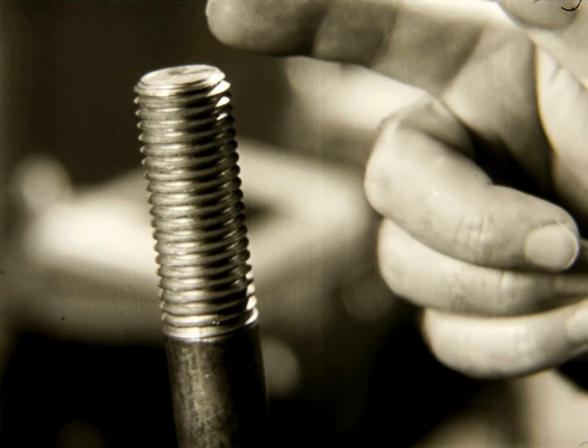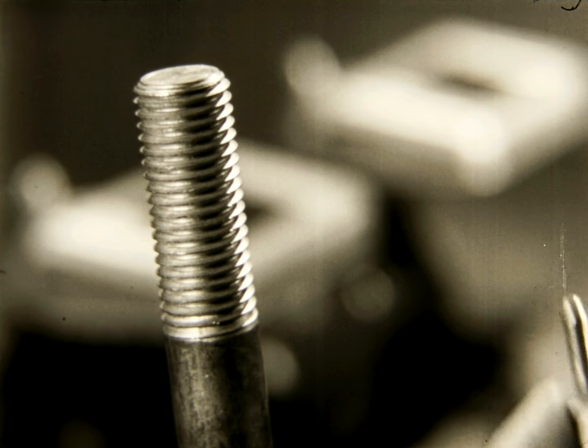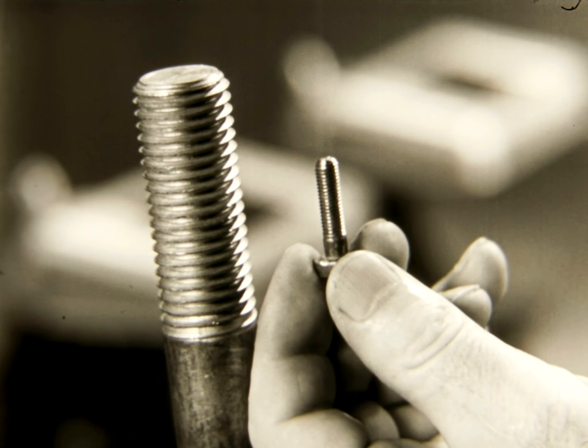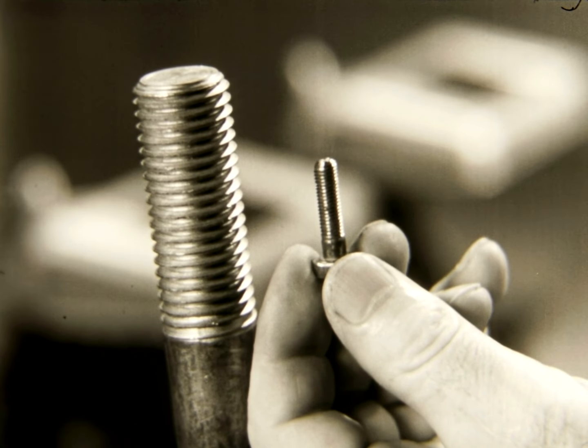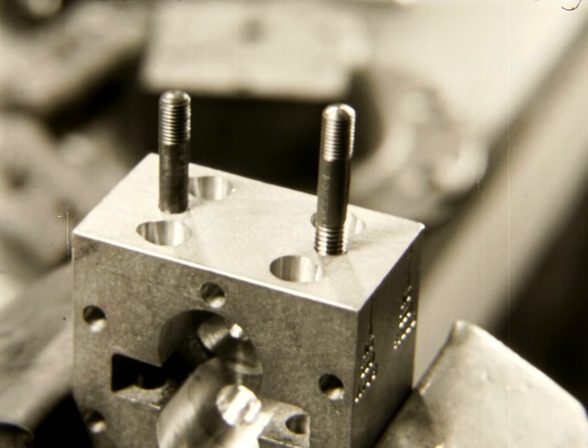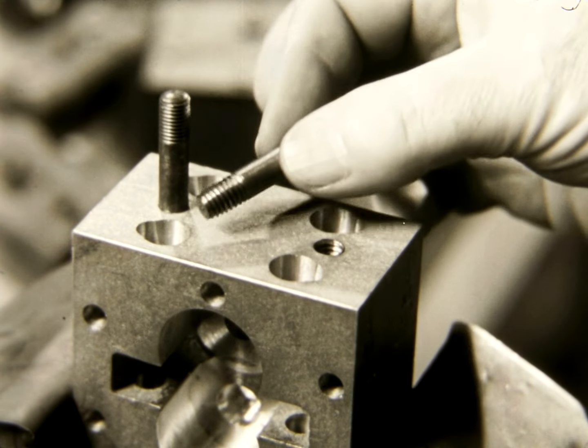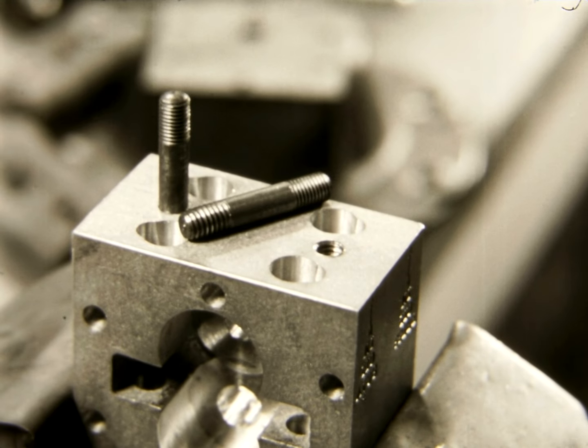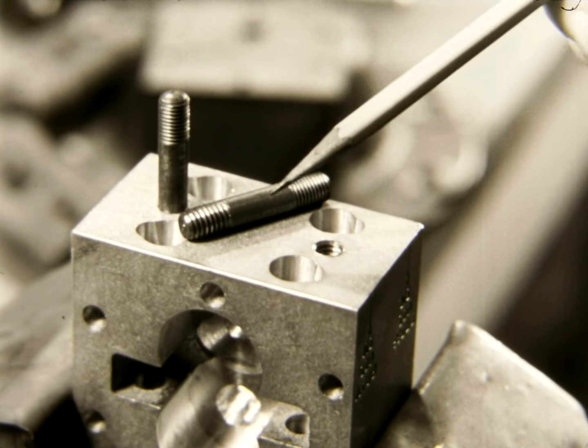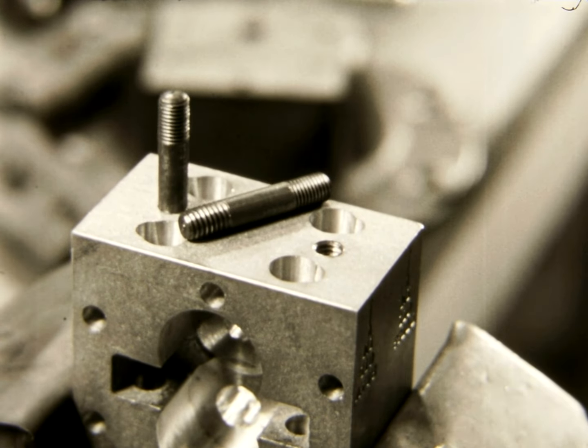Coarse threads like this on work of big diameter are always cut on machines. Threads like this may be cut by hand. Whenever parts are held together by threads, one part must have a thread on the outside called an external thread. This must screw into the other part which has a thread on the inside called an internal thread.